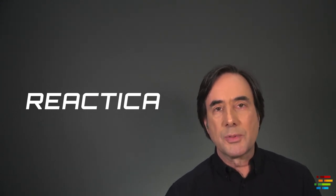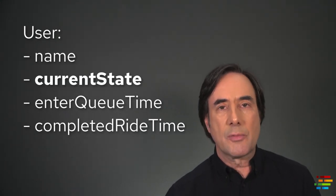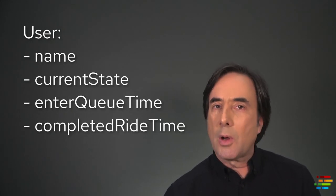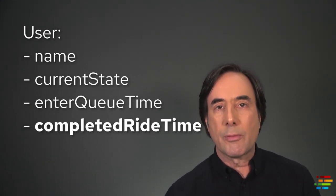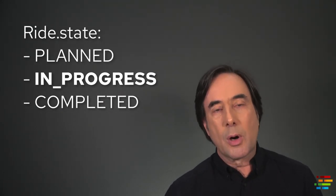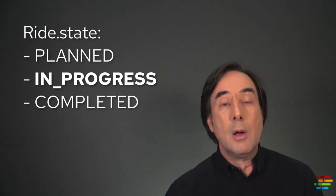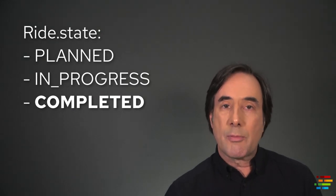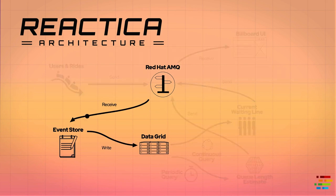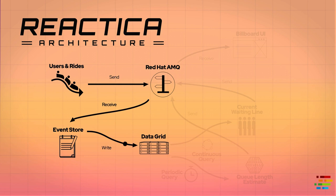For the objects themselves, a user has a name and a state. The state of a user goes from in queue, to on ride, to completed ride. The user object also has data about when they got in line and when they got off the ride. A ride object represents a single round trip of the coaster. When a ride's status changes to in progress, some number of users have their state changed to on ride. When the ride's status changes to completed, those users have their state changed to completed ride. The event store component makes sure that all user objects end up in the data grid. The users, rides, and event store components on the left side of the diagram create the data that drives everything else in the system.